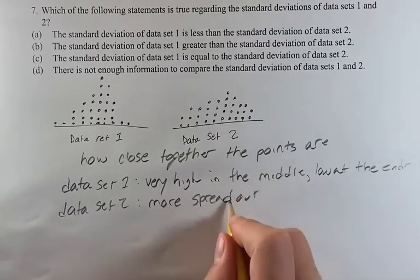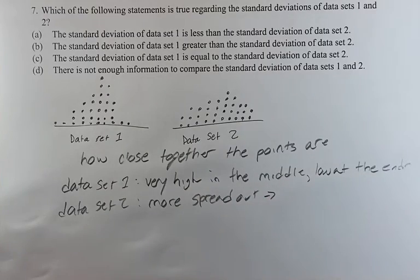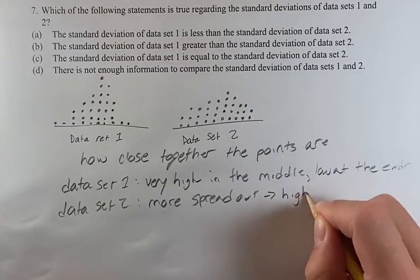The more spread out something is, the higher standard deviation is. The higher the points are deviating away from that mean. This is a higher standard deviation.